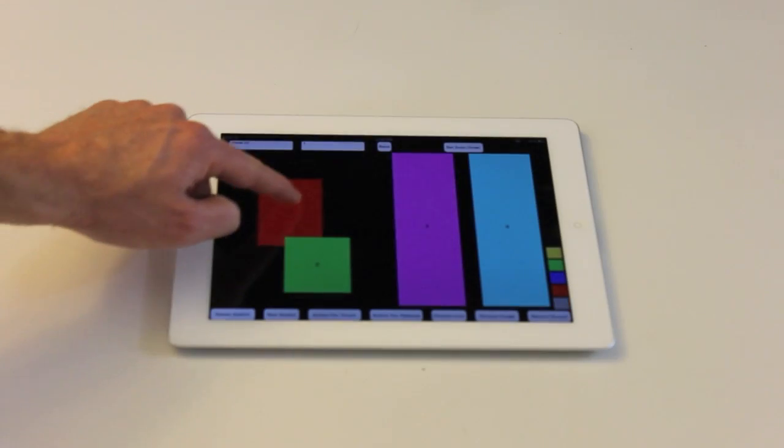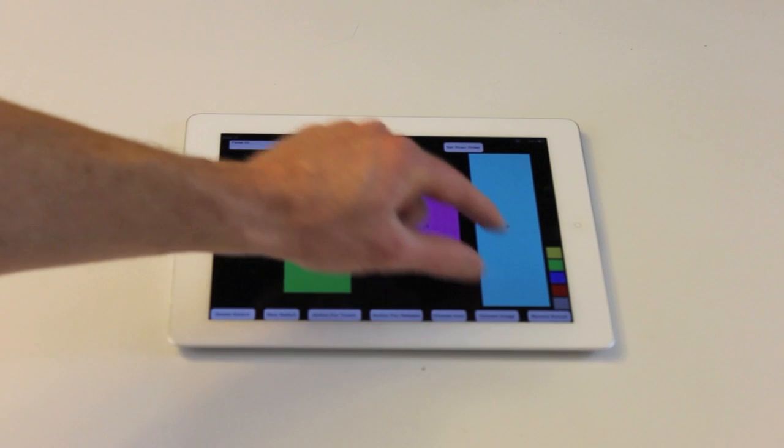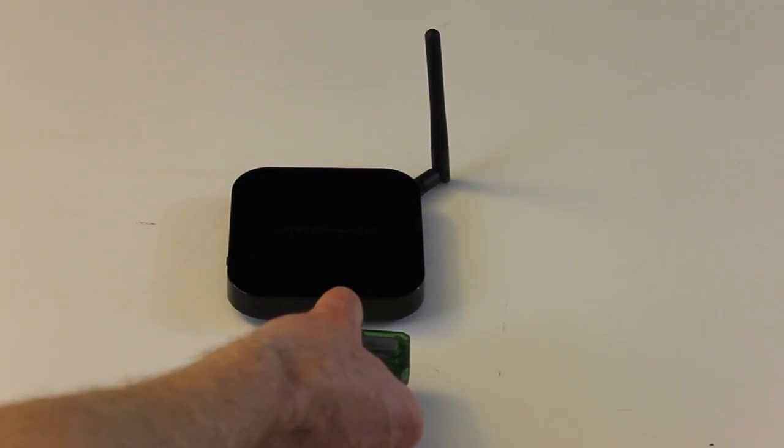This Hexbug Inchworm costs around $20, and its controller is too small to adapt. But in a couple of minutes, you can configure a panel and teach the Switchamajig IR to control it from the iPad.